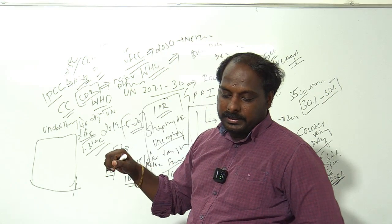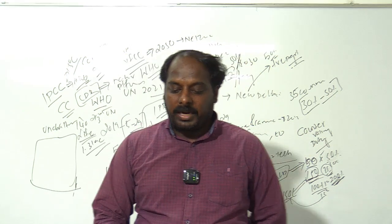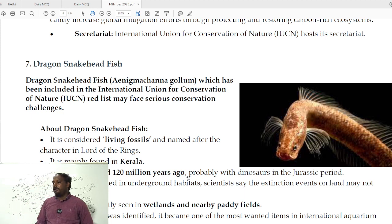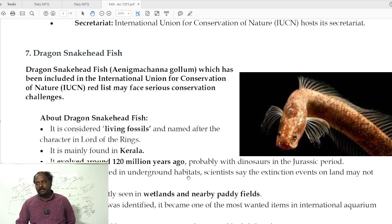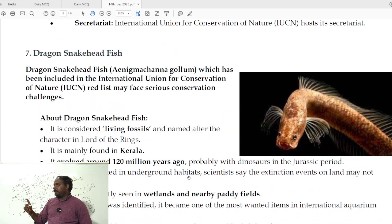The next article is related to the Dragon Snakehead Fish. This is a living fossil from the Jurassic period found in wetlands and paddy fields. It's also called lucky fish. It was added to the IUCN list as vulnerable category and is in Schedule 2 category of Wildlife Protection, not Schedule 1.